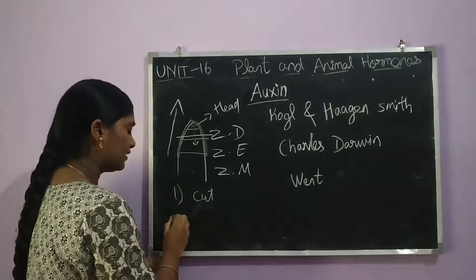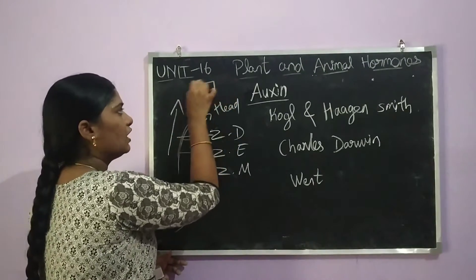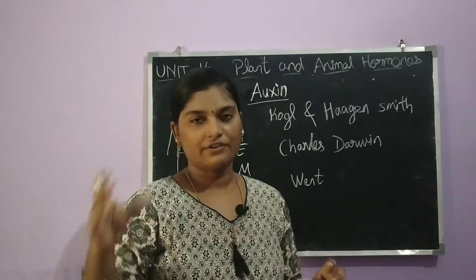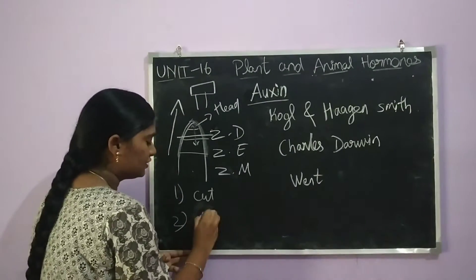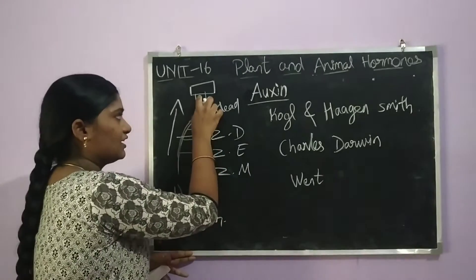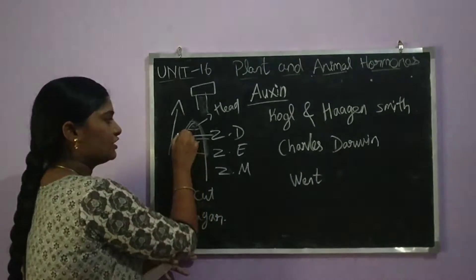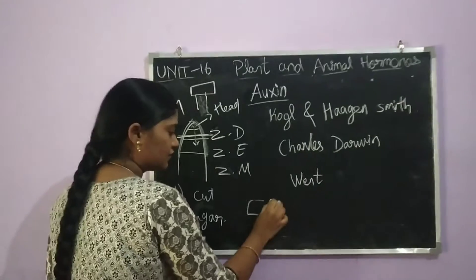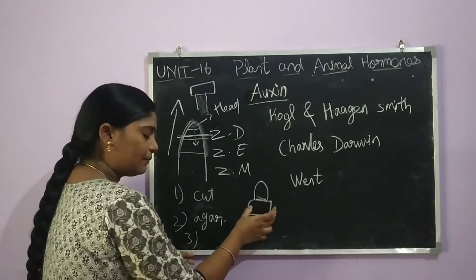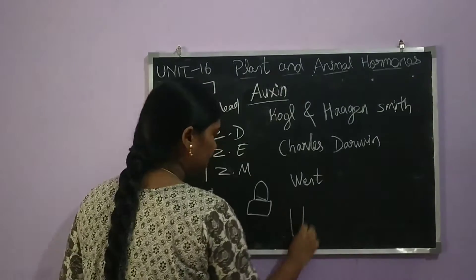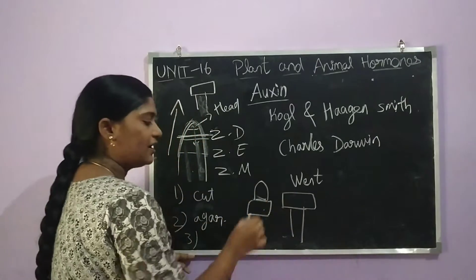In the second step, the tip is cut and an agar block is placed over the cut. The plant will grow further because the agar block absorbs the chemical substance from the tip. In the third step, when the tip is placed on an agar block and that block is placed back on the cut plant, the plant promotes growth.